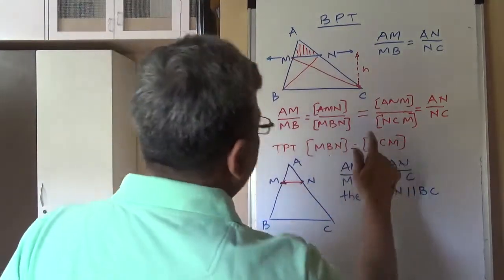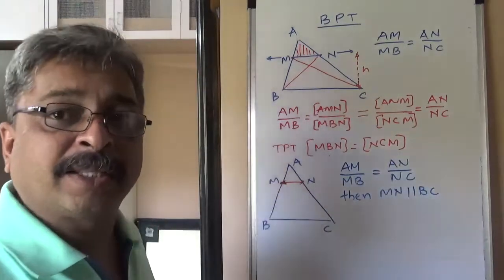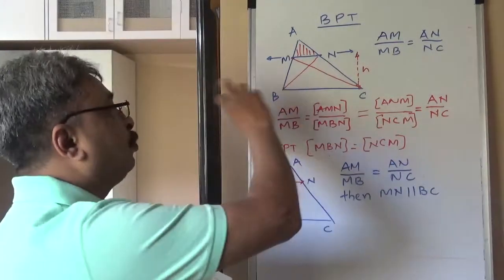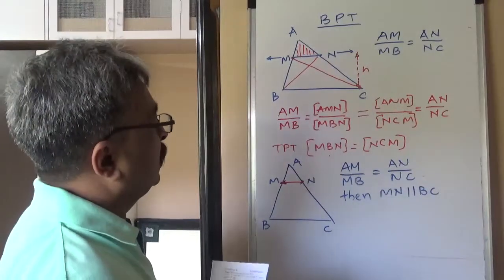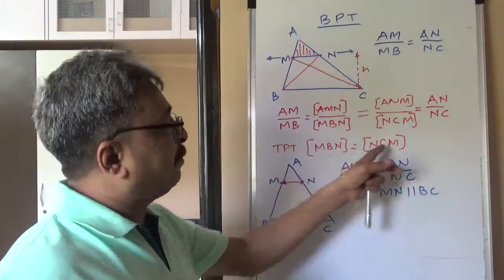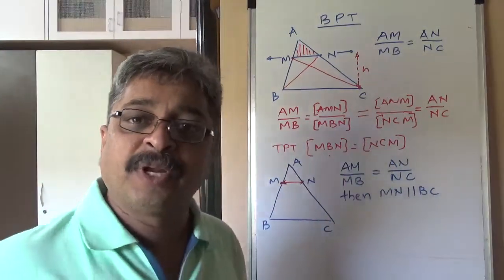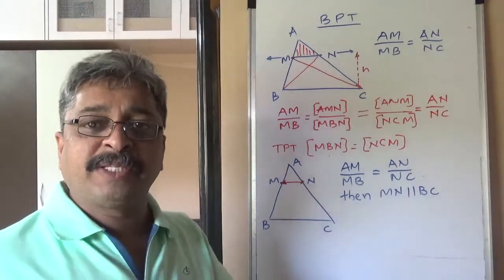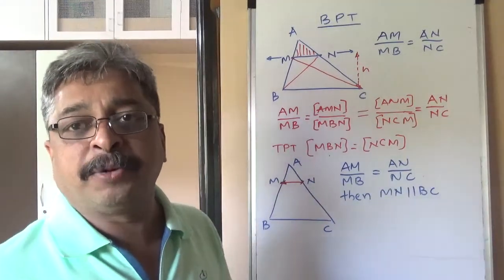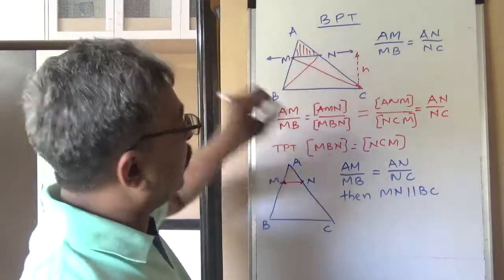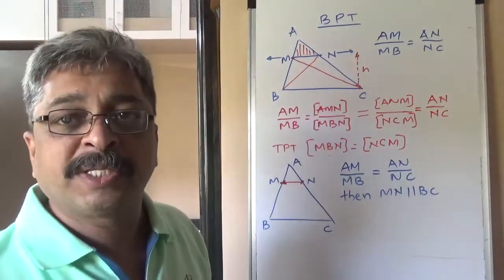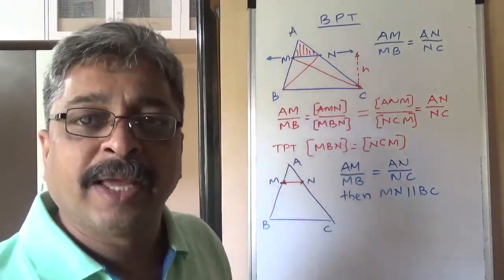Therefore, these two must be equal. And they are the areas bounded between two parallel lines. Of course, they have the same base. And therefore, if the areas are equal, same base is equal. And therefore, height must be equal. And height of MN from BC, if it is equal, then MN must be parallel.